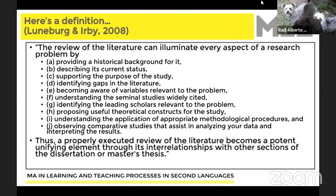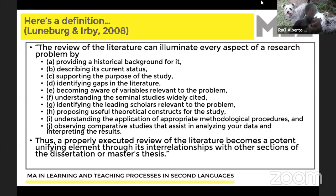We always talk about peer review as the main standard, because not every peer-reviewed journal is an indexed journal. Indexation is the result of time, presence, and number of citations — those are different factors. What you want to make sure is that the journals you review guarantee a process of peer review.